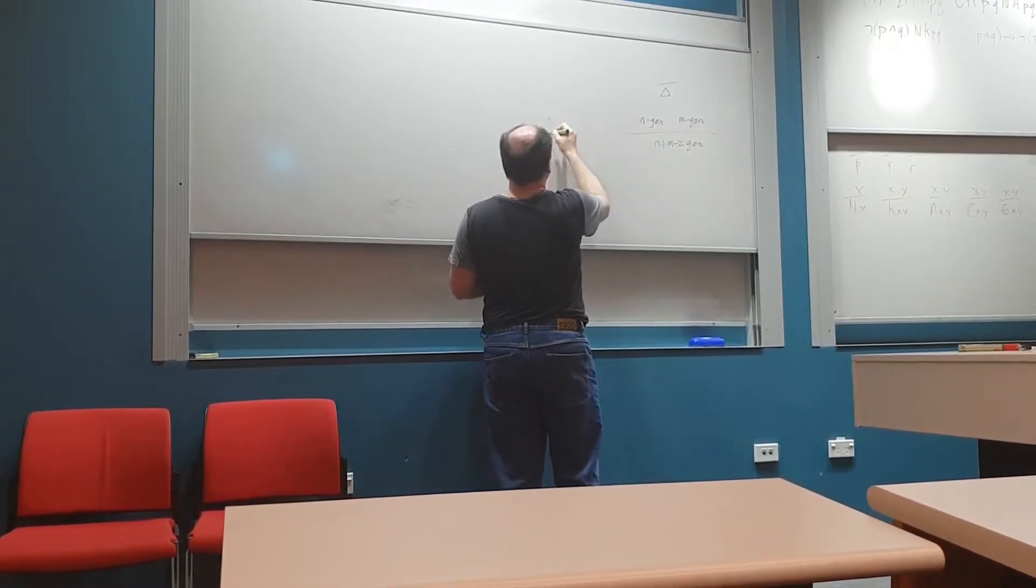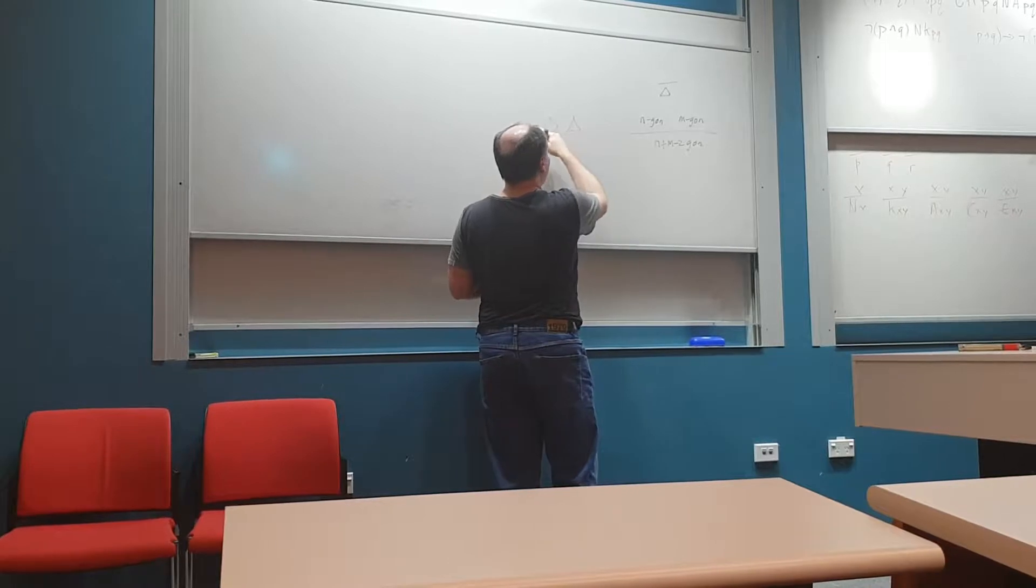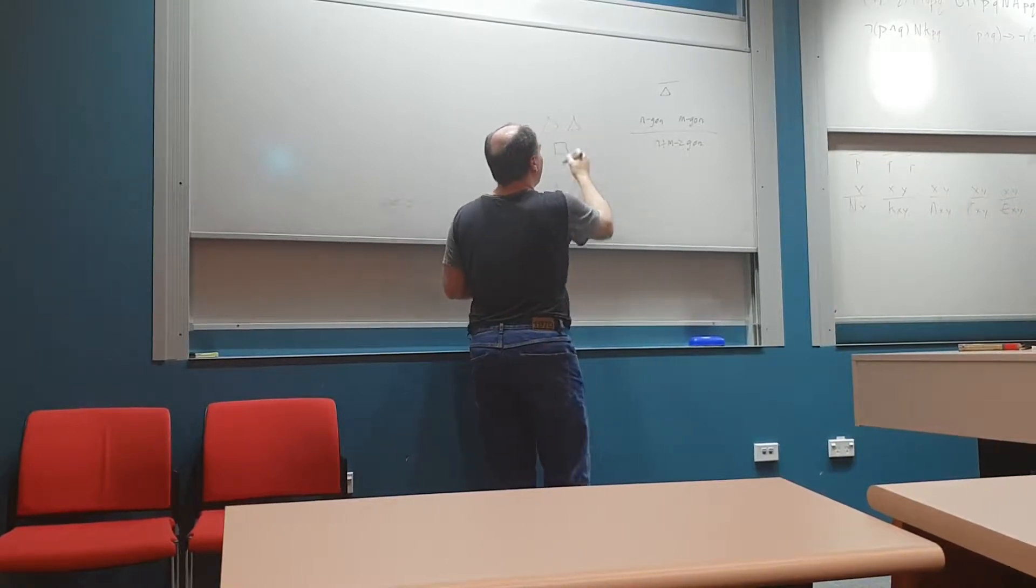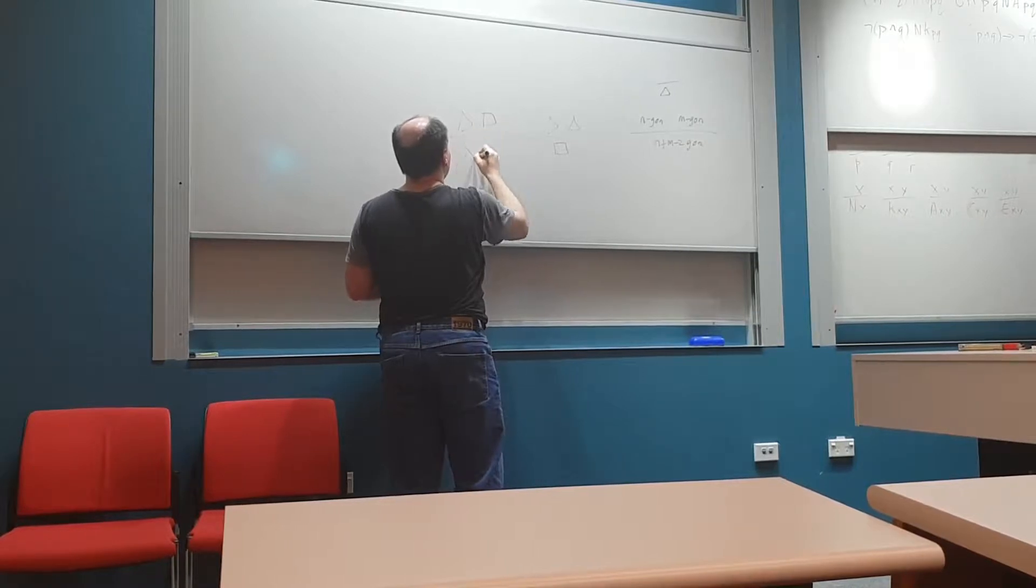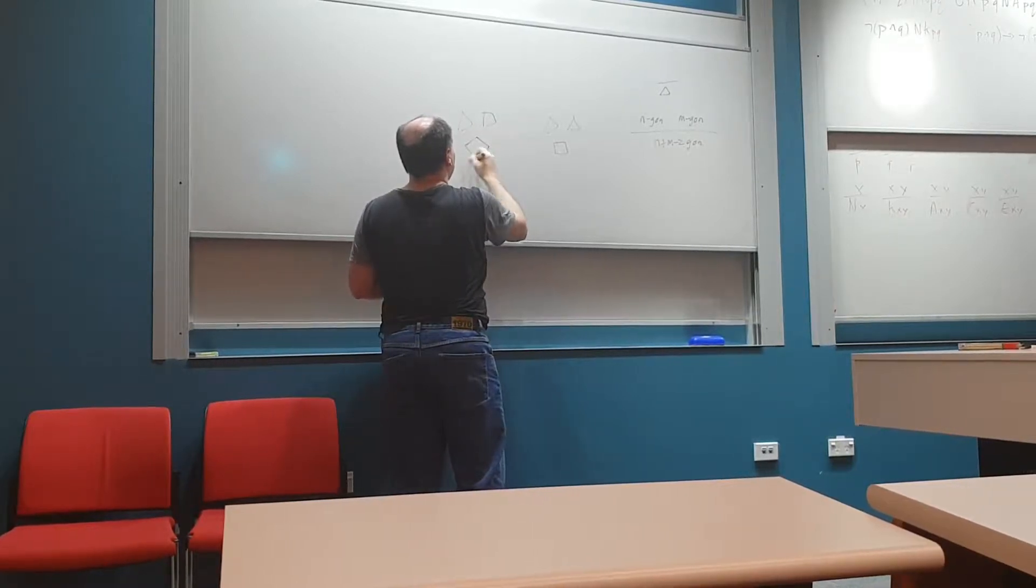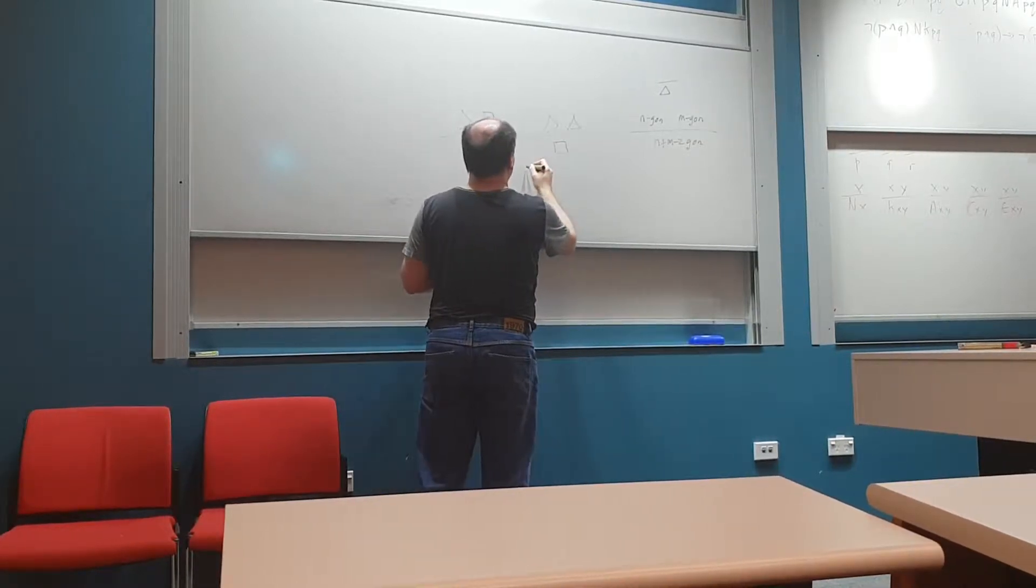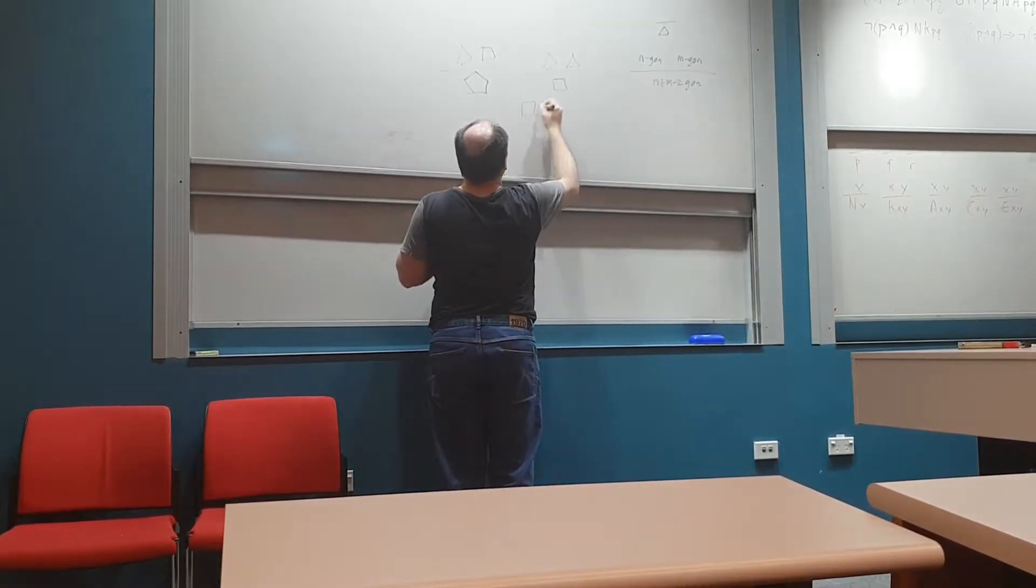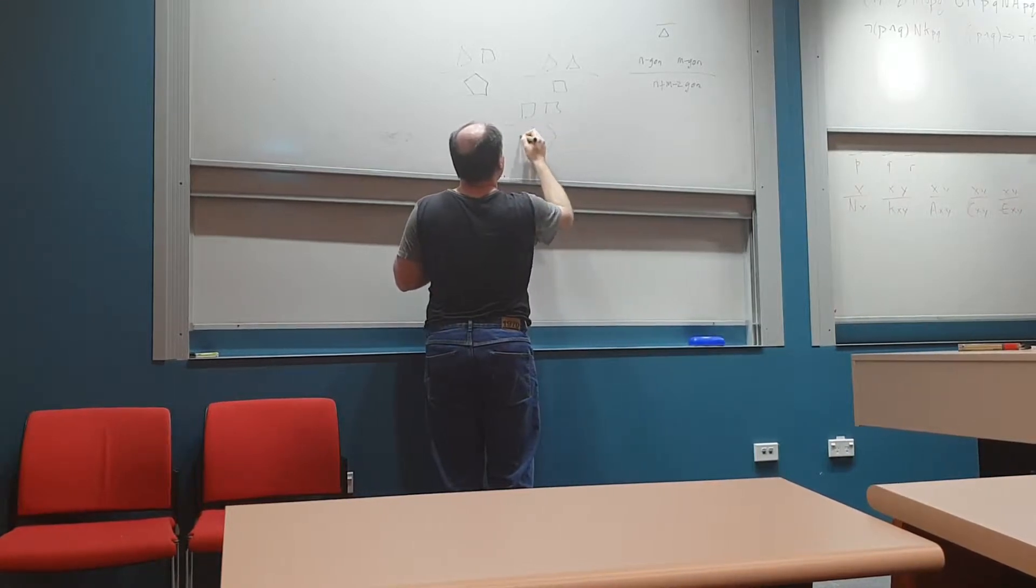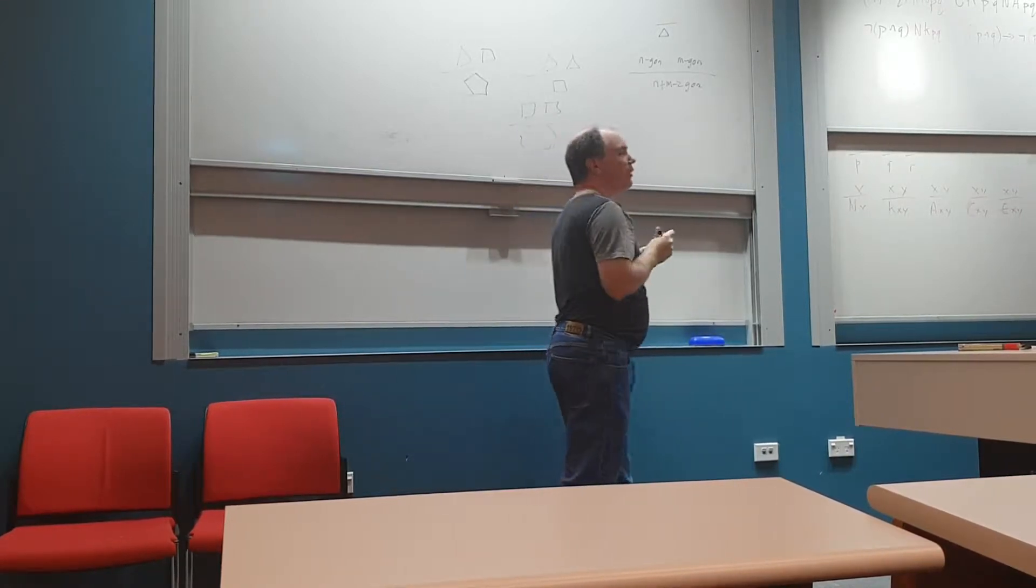So that means you've got a triangle and a triangle, 3 and 3, you create a square. A triangle and a square creates that pentagon. A square and a square gives you a hexagon, and so on.